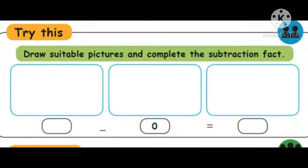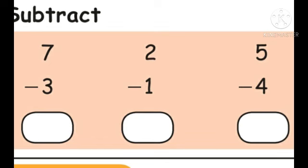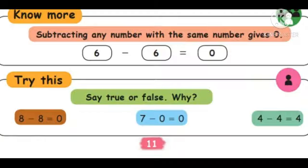Draw suitable pictures and complete the subtraction fact. Draw the number of pictures for the first number, zero means none, and the answer is the same number. One minus zero equals one — draw one picture in the first column, then zero, then one. Subtracting any number from itself gives zero — six minus six equals zero.